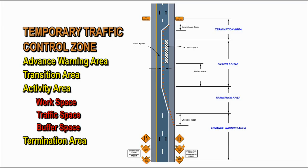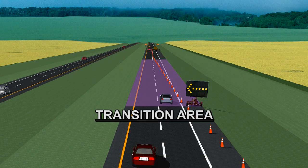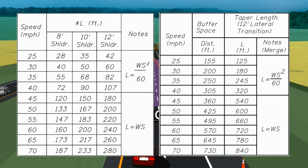As a review, these are the four parts of a temporary traffic control zone. The advance warning area is the section of highway where road users are informed about the upcoming work zone. The transition area is that section of the highway where road users are redirected out of their normal path by a taper or lane shift to eliminate interference with work activities. The length of the taper or lane shift can be found in the Index 600 series.